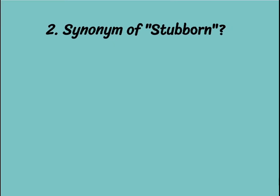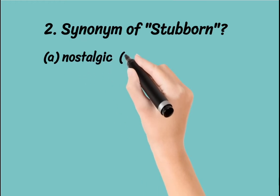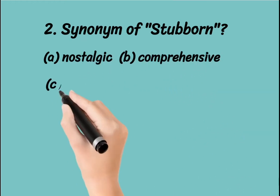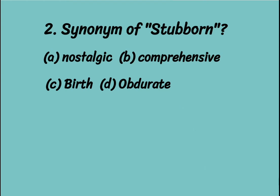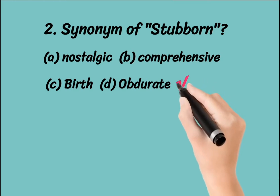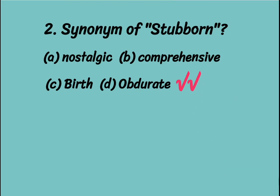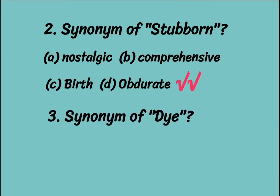The second synonym question: what is the synonym of 'stubborn'? Options are: nostalgic, comprehensive, birth, or obdurate. Stubborn means 'zidhi' (obstinate). None of the other options directly mean that, but option D — obdurate — is contextually the synonym of stubborn. So option D is correct.